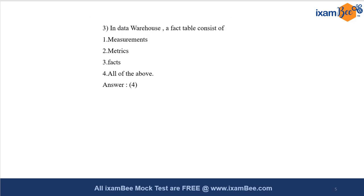The third question from the objective part is from data warehousing, asking about what a fact table consists of. A fact table consists of measurements, metrics, and facts, so the answer is all of the above. These three questions were taken from the previous year 2021 paper — they are memory-based, and the topic from which they were asked remains the same even if the question language differs. This gives you an idea of the difficulty level you can expect in phase 2 paper 2 for one-mark IT questions.